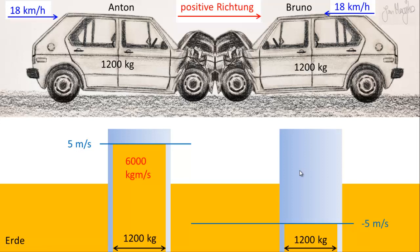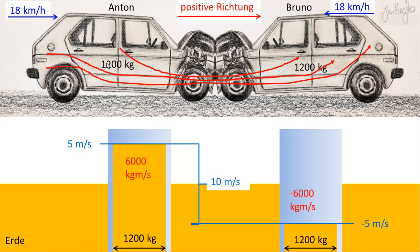Bruno fährt eigentlich rückwärts. Das heißt, Bruno hat nicht 18 km/h Geschwindigkeit, sondern minus 18 km/h, bezogen auf das, was wir als positiv definiert haben. Entsprechend ist seine Geschwindigkeit negativ, nämlich minus 5 m/s, und der Impulsinhalt ist negativ. Das heißt, das Auto von Anton hat einen Überschuss an Impuls, das Auto von Bruno hat eine Schuld an Impuls. Während der Stoßphase, wo sich die Anfangsrelativgeschwindigkeit von 10 m/s ausgleicht, fließt Impuls von Anton zu Bruno. Dieser Impulsausgleich hat zur Folge, dass beide einfach nichts mehr haben – Stillstehen.